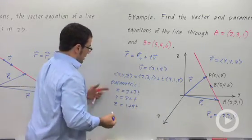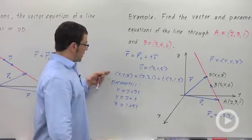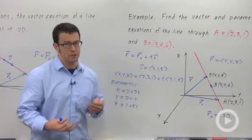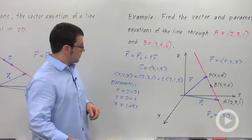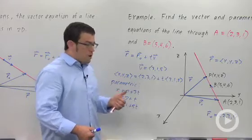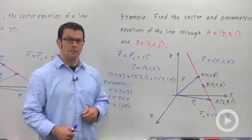And that's it. These are the parametric equations. They come right out of the vector equation. So when you're asked to find both the vector equation and the parametric equations, it's really not that much harder to write the parametric equations down. If you know two points on a line, you can come up with the vector and parametric equations of the line.